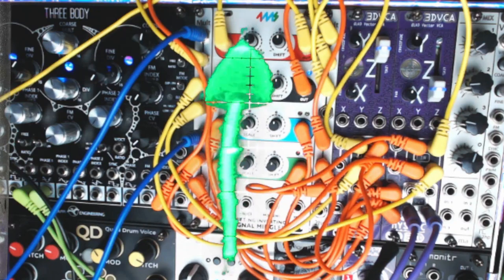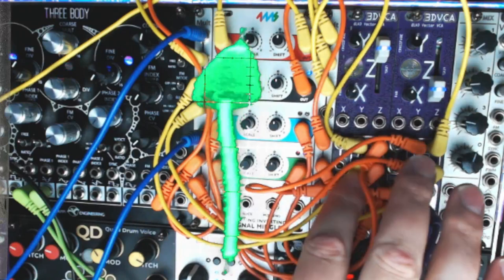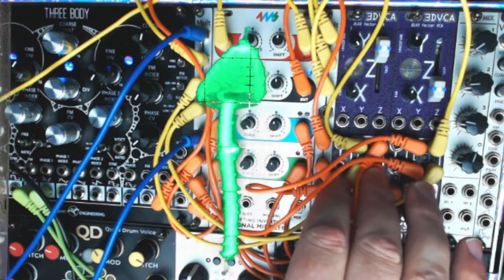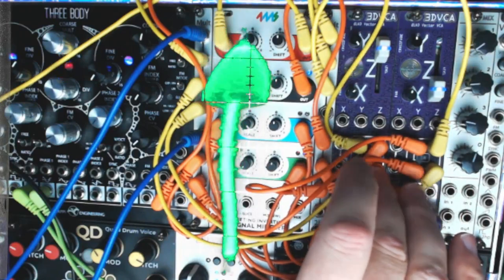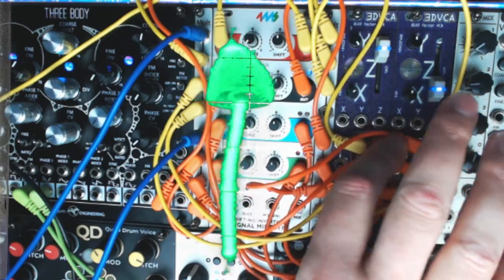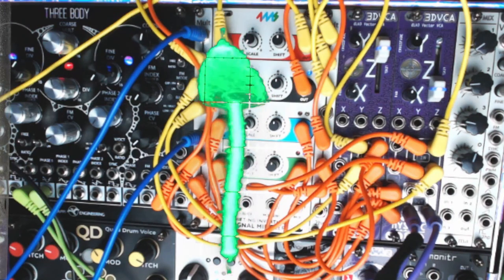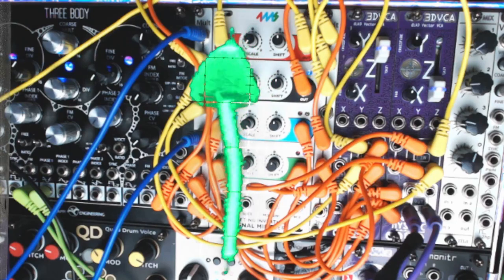Then we can take the non-inverted X and Y signals and send them into 3DVCA's southwest and southeast inputs, while taking the inverted XY signals and sending them into 3DVCA's northwest and northeast inputs.